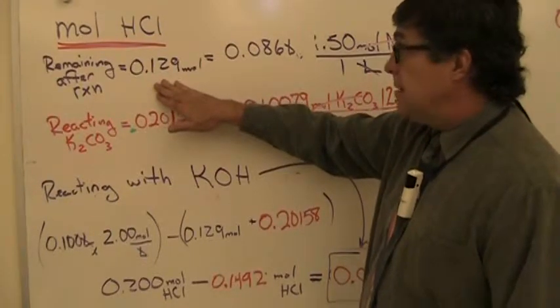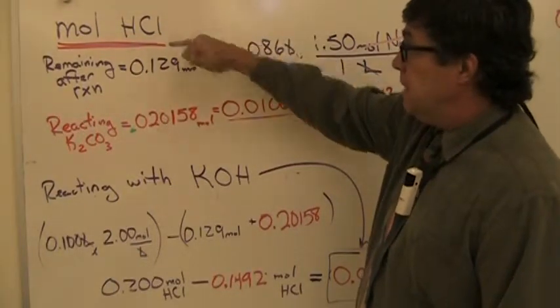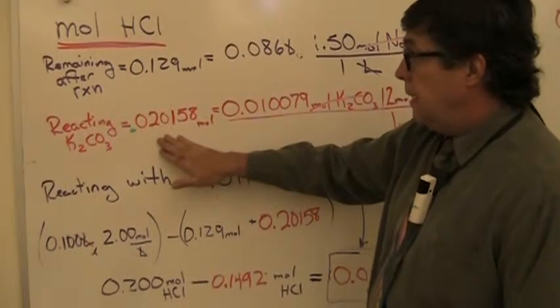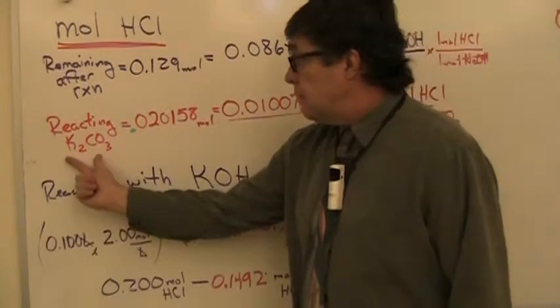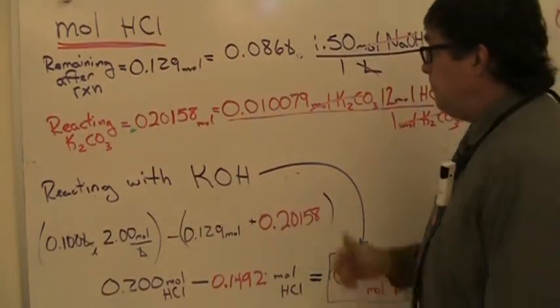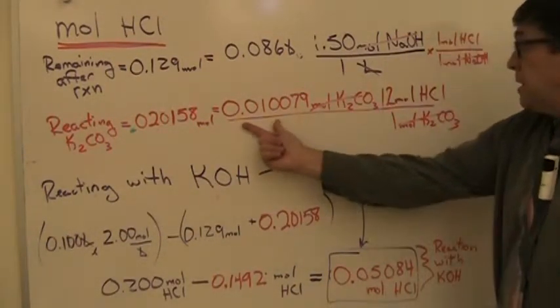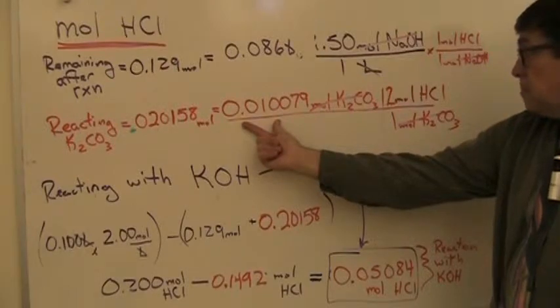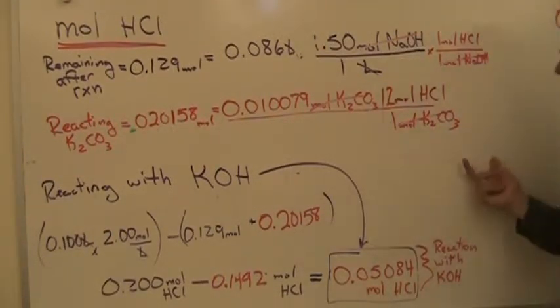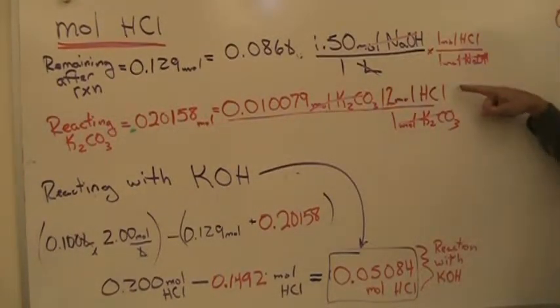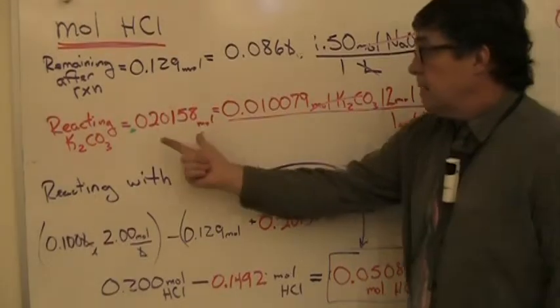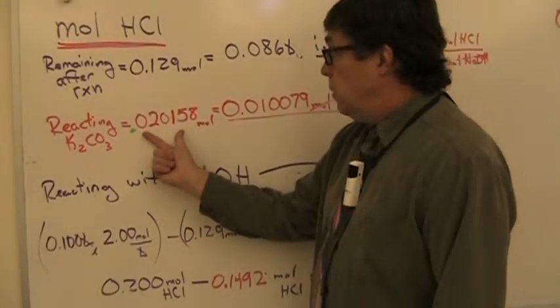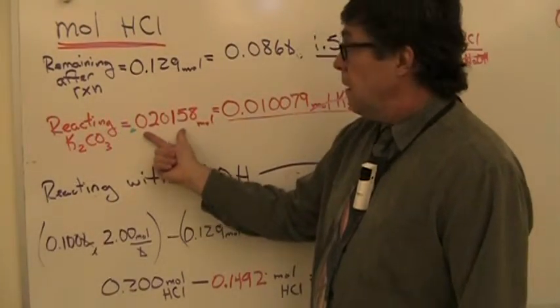That's the moles of HCl that I had left. I reacted in the initial reaction with the potassium carbonate. I had this many moles of potassium carbonate, and if you look at the balanced equation, there's two moles of HCl required for every one mole of potassium carbonate, so that's 0.020158 moles reacted.